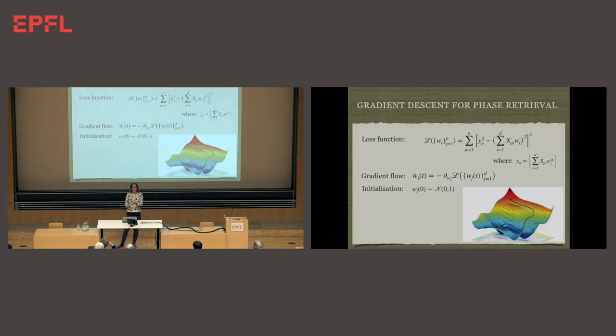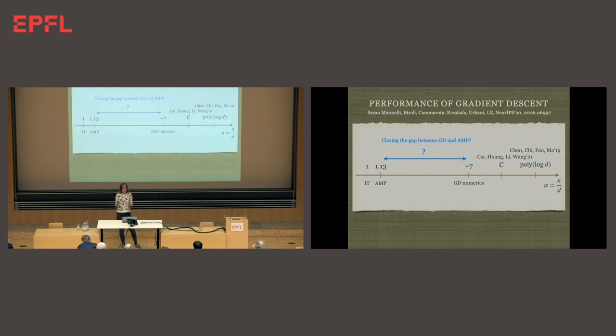So what's getting wrong with gradient descent? Deep learning uses gradient descent, not message passing. When we actually apply gradient descent algorithm on the very same problem, the very same data, the phase retrieval, nothing changed here but the algorithm is changing. We are not using this optimal message passing but the usual gradient descent on a loss function that is very reasonable for this problem. We obtain that there is a big gap between the performance of gradient descent and message passing. Message passing needs something like 1.13 samples per dimension. Gradient descent numerically needs something like 7 times the dimension. If you want proofs and theorems, it's some large constant or even polynomial of log d. So much more. There is a gap. Can we close this gap? What's going on? Why would people in machine learning use an algorithm that is so vastly suboptimal? That seems like a bad idea.